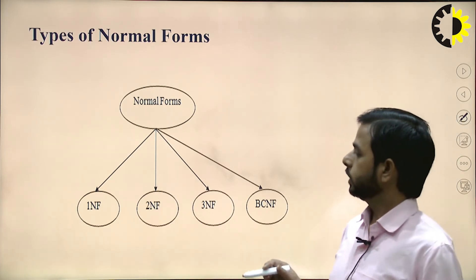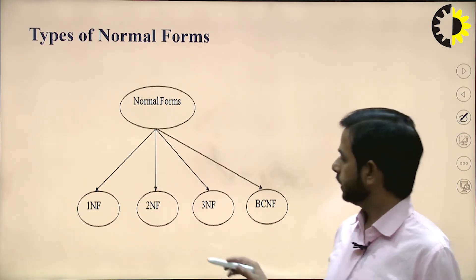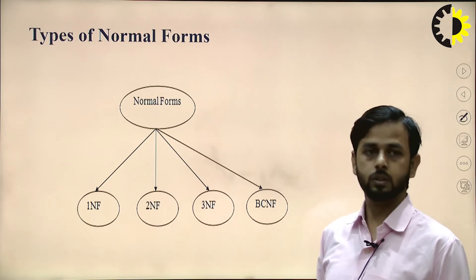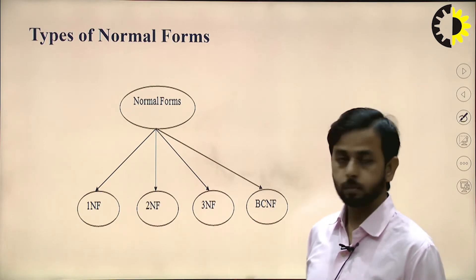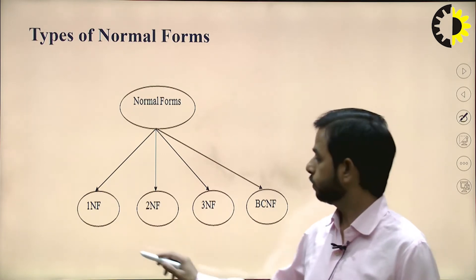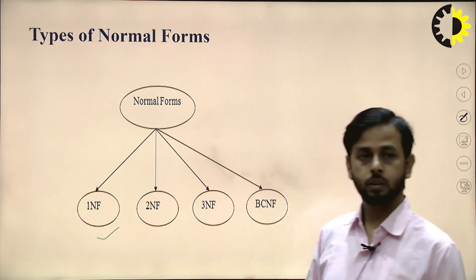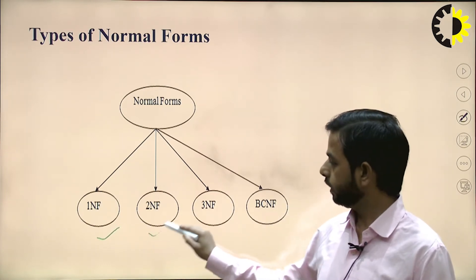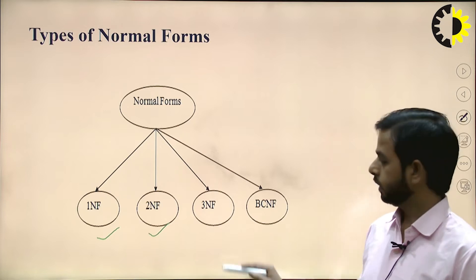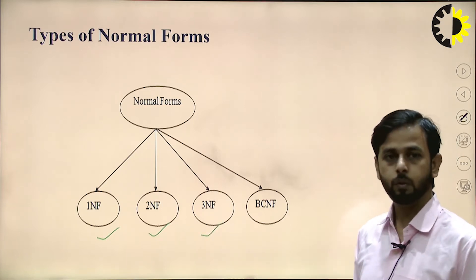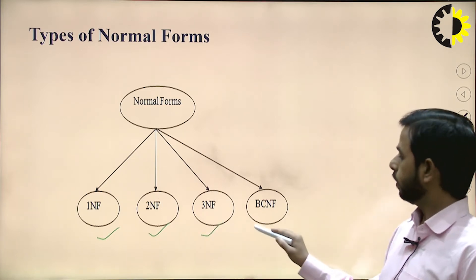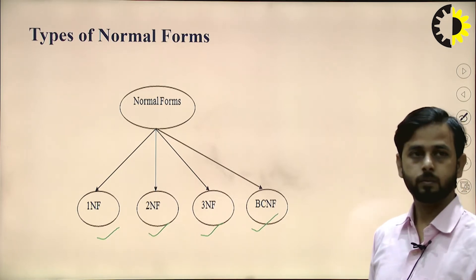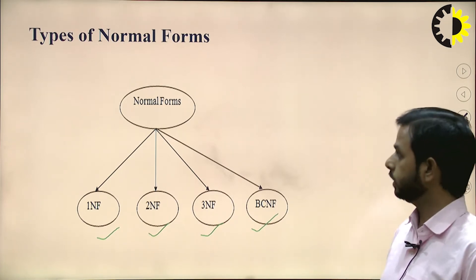Types of normalization — normalization is basically based on functional dependencies. There are four types: first is 1NF (First Normal Form), 2NF (Second Normal Form), 3NF (Third Normal Form), and BCNF (Boyce-Codd Normal Form). Let us discuss them one by one.